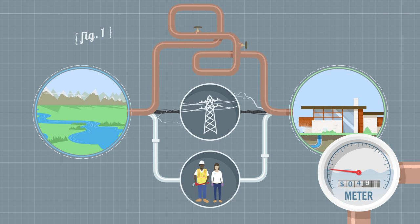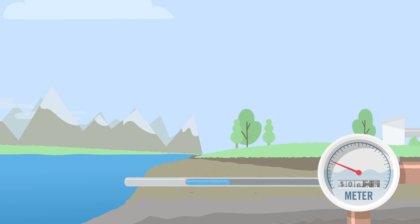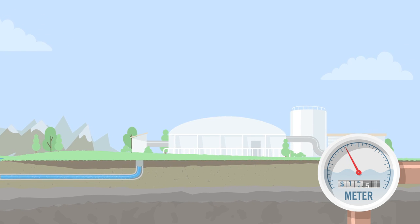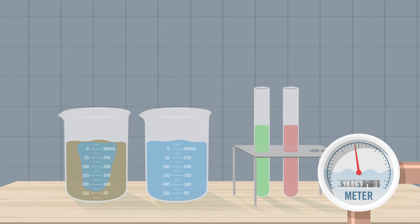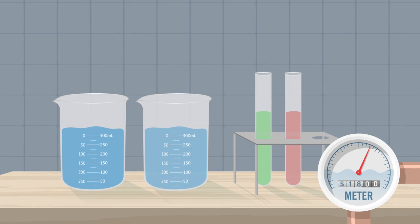Your water provider first pumps water from the source through underground pipes to a water treatment facility, which processes millions of liters of water a day. Here it's cleaned, filtered, disinfected, and tested constantly by professionals until it's safe for you to drink.